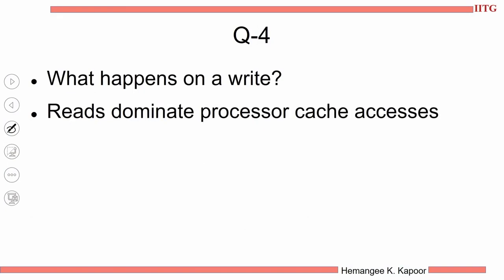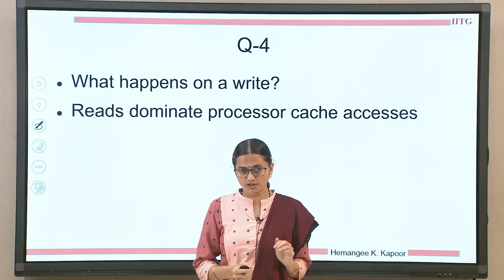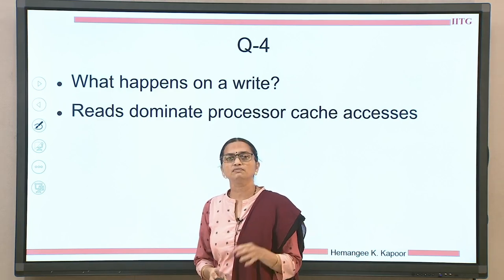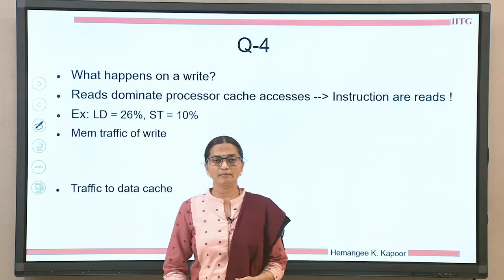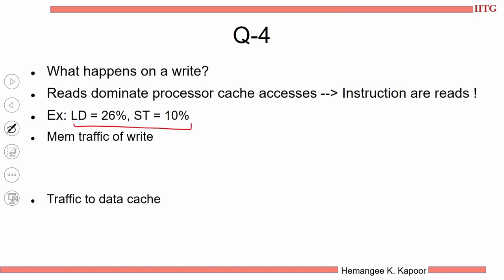The next question is: what happens on a write? We are interested in writes particularly because most of the time reads happen in a processor. If you see any program execution, the maximum accesses are read accesses. Here is an example program: loads are 26 percent and stores are 10 percent. Now I will ask you a question — what is the memory traffic on a write and what is the traffic to the data cache? So we have instruction cache, data cache, and then main memory behind it. You can pause the video and calculate this.